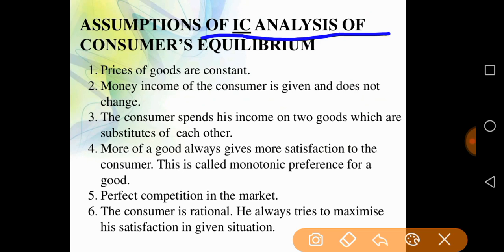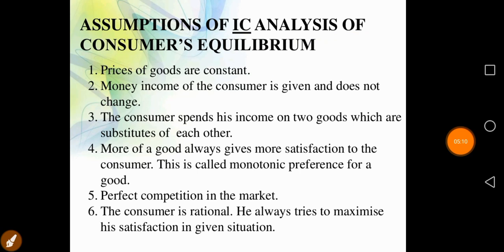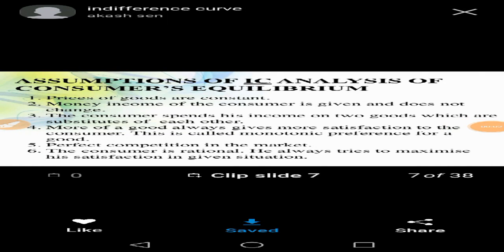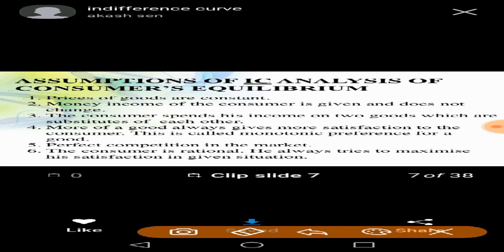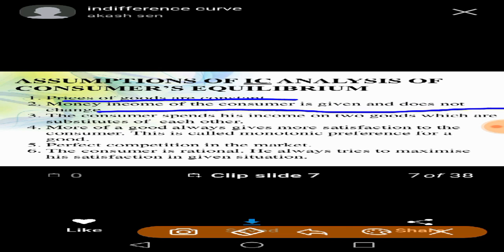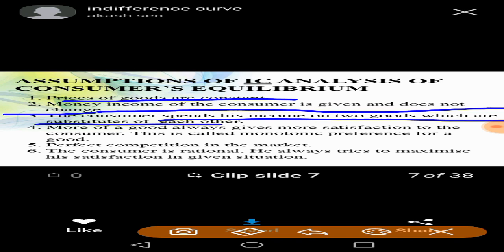Assumptions of IC analysis: First, prices of goods are constant. The IC curve explains that commodity prices remain the same across combination sets A, B, C, D — there is no change in prices. Second, income is given and constant. Third, the consumer spends income on only two commodities which are substitutes of each other.